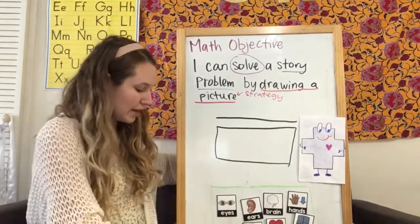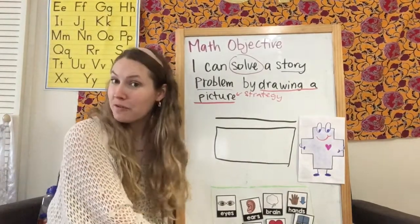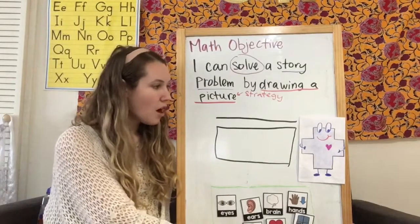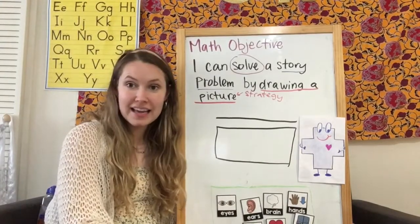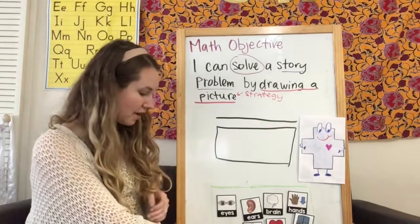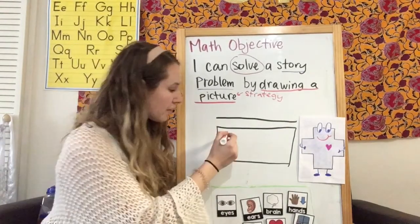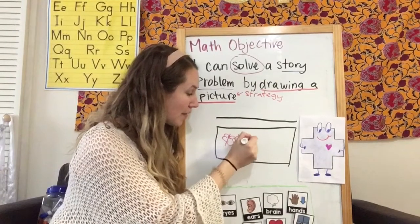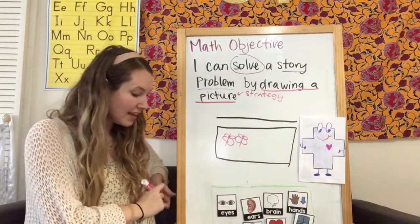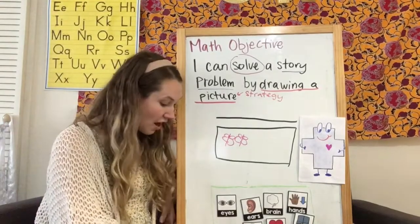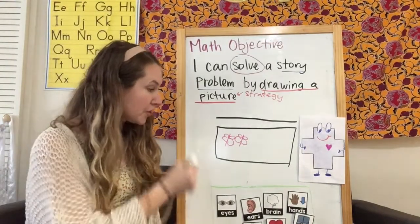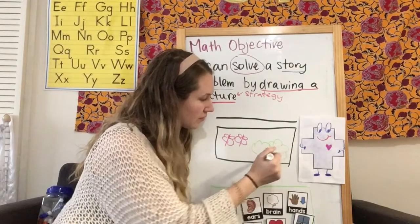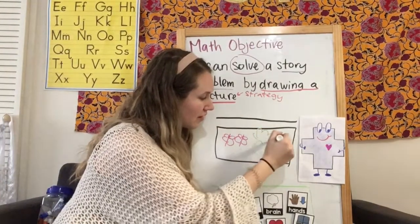So let's start with a story problem about Peter and the Wolf because we've been talking about him in reading. So Peter went walking in the meadow. And in the meadow, he saw two butterflies. I'm going to draw two butterflies because I heard about that in my story problem. And he saw four bushes. So I'm going to draw four bushes. One, two, three, four.